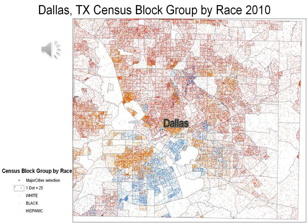This map utilizes a dot density method of color coding. Each dot represents 25 individuals. The red dot represents the white race, the blue represents the black race, the green represents the Asian race, and the orange represents the Hispanic race. The Hispanic population represented in orange is predominantly central in Dallas, with some in the northern and south to southwest regions. The black population predominantly resides in the southern portion of Dallas, and the white population is evenly spread throughout Dallas, except in the southern region where the white population is scant.